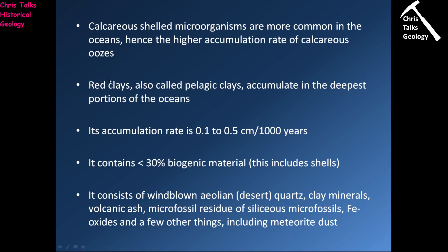The red clays, also called pelagic clays, accumulate in the very deepest portions of the oceans, and their accumulation rate is extremely low — 0.1 to 0.5 centimetres per thousand years — so it takes a very long time for them to build up. They contain less than 30% biogenic material, so less than 30% siliceous or calcareous shells. Obviously, if they had greater than 30%, you'd be looking at a siliceous or calcareous ooze.